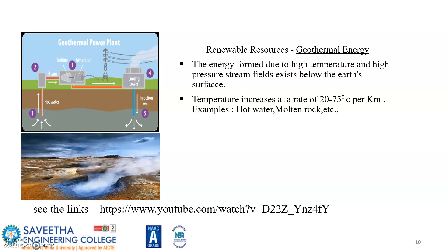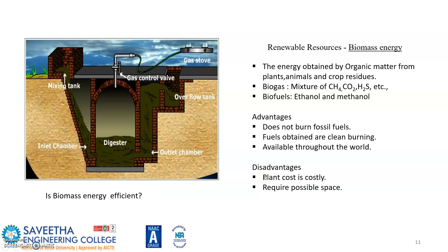Geothermal energy is the energy formed due to high temperature and high pressure steam fields that exist below the Earth's surface. Temperature increases at a rate of 2.5 to 75 degrees Celsius per kilometer. Examples include hot water and molten rock. A link for geothermal energy as a renewable source has been provided.